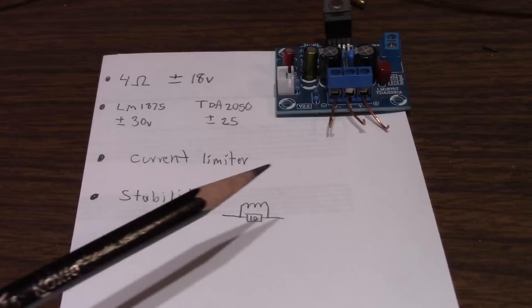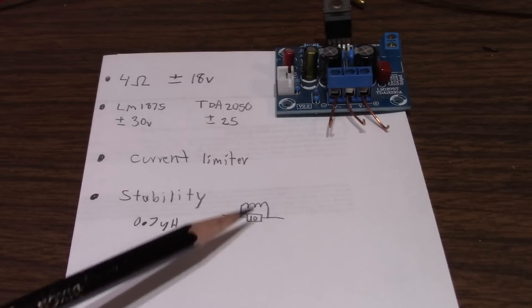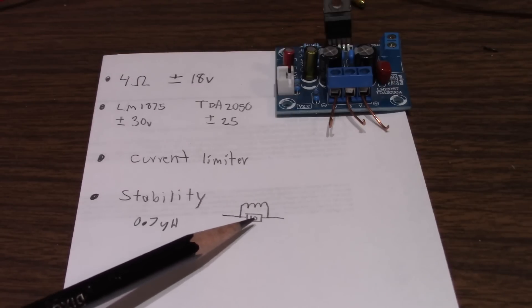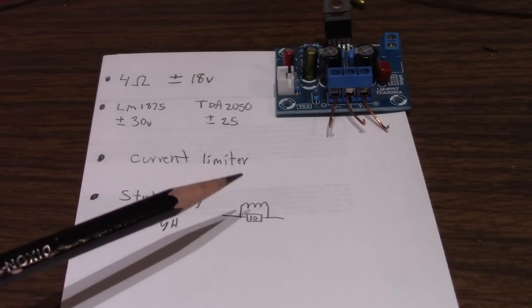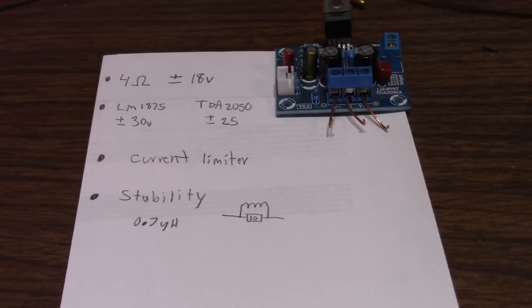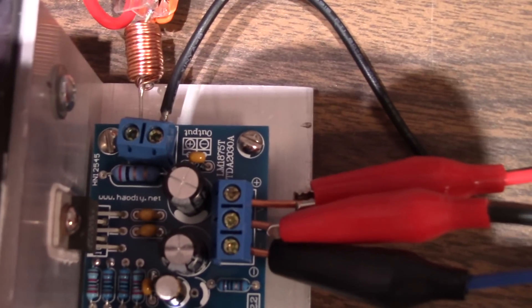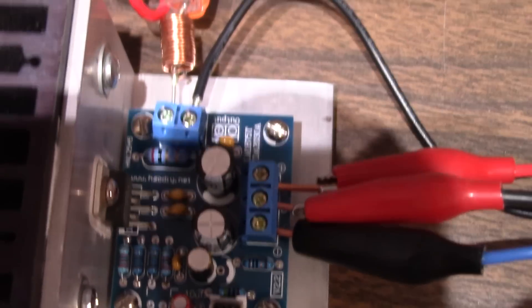I would recommend putting a coil on the output of both of them. I believe they call it a Zobel network. It's a coil in parallel with a 10 ohm resistor. And the chip should be fine with 0.7 microhenry. And you saw that when I set up my circuit here. I tested it. I had the coil installed here.